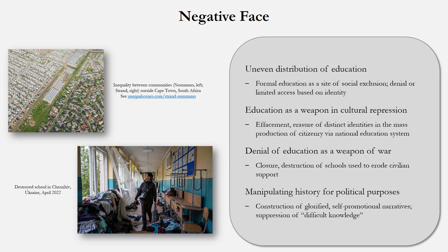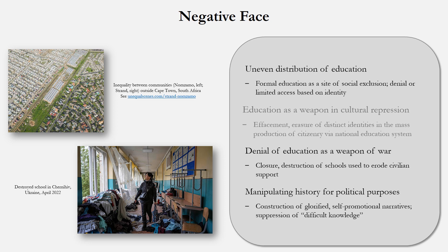So let's get more specific. How can education have a socially destructive impact? For one thing, schools are a site of social exclusion. The uneven distribution of education as a social good involves discriminatory policies and practices that restrict access to educational opportunities based on identity. This was most stark in apartheid South Africa, the contemporary legacies of which are seen here in this picture on the top left. You could also look at the reverberations of Jim Crow America, where the separate-but-equal doctrine may have been rejected, but U.S. schools remain highly segregated.